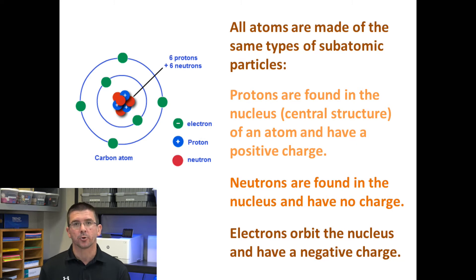Orbiting or circling around these are electrons, which are the negatively charged particles. We talk about electricity being the flow of negatively charged particles. It's actually the flow of these electrons that generates electrical current.